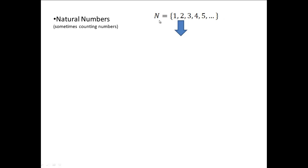Capital N is used to represent natural numbers. The two curly brackets are enclosing the elements of the set. These are called elements of the set, separated by commas: 1, 2, 3, 4, 5, and the dot-dot-dot represents that the numbers go on infinitely.